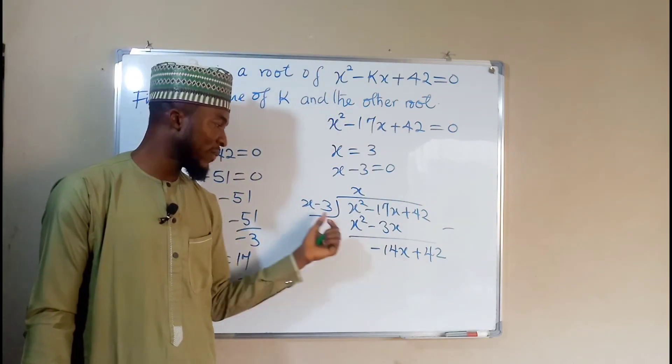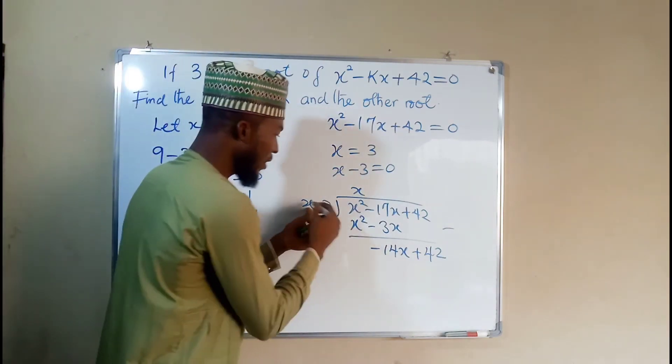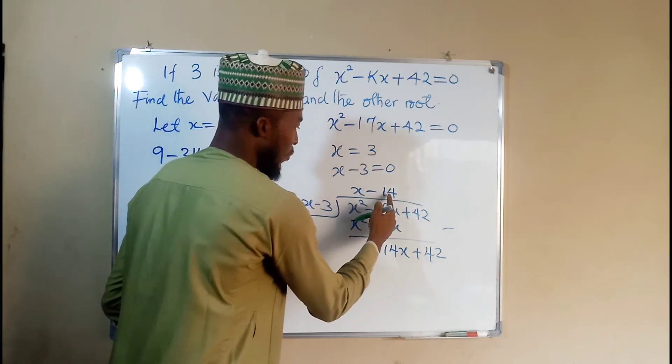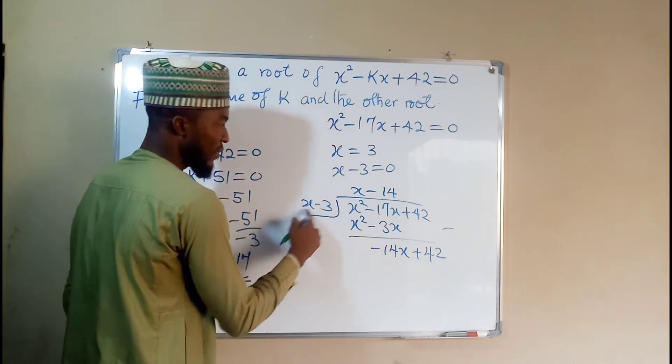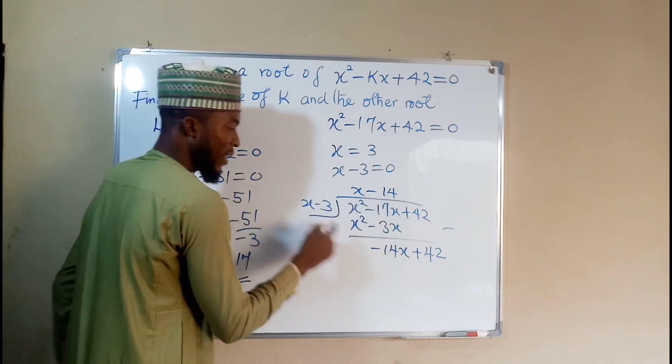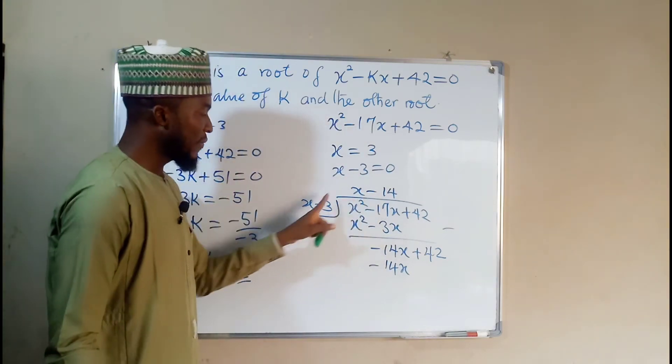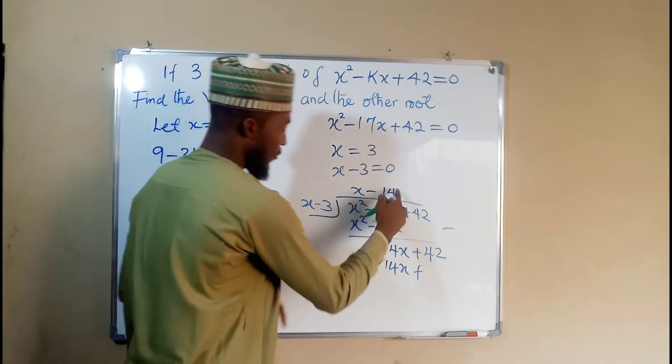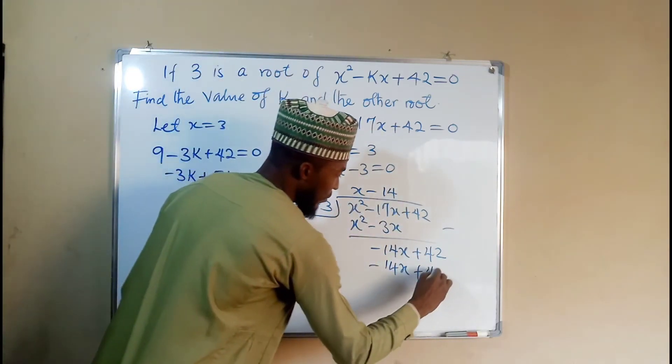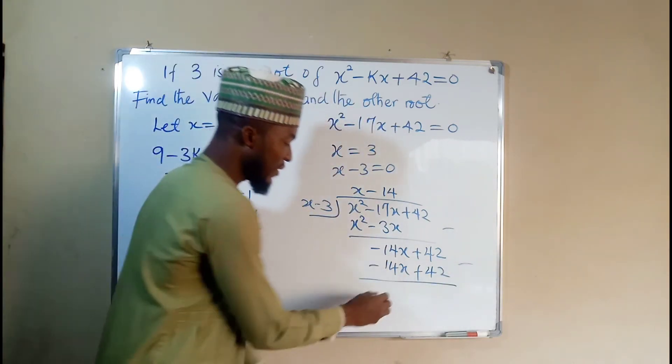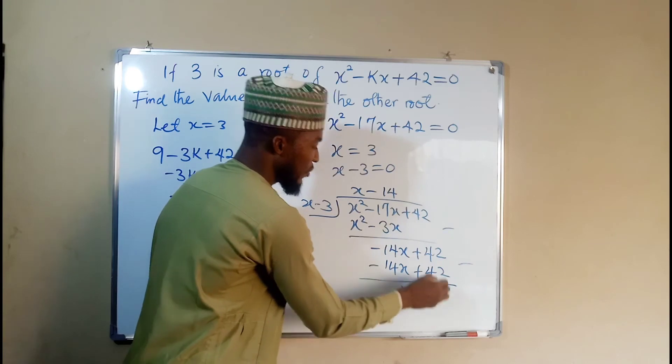Negative 14x divided by x. X will cancel x, leaving negative 14 alone. And we say this times this. Negative 14 times x is negative 14x. Negative times negative is positive. 14 times 3 is 42. We equally subtract. This minus this is 0. This minus this is also 0.